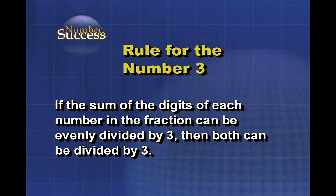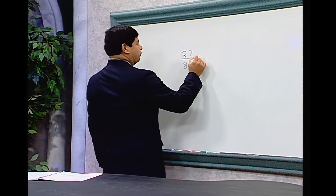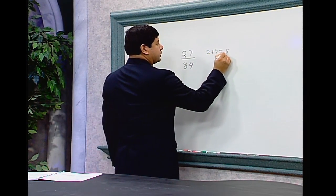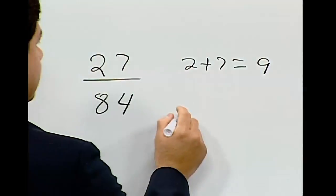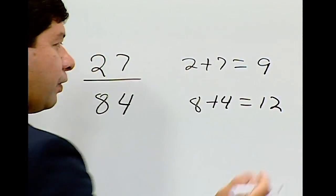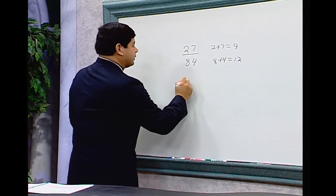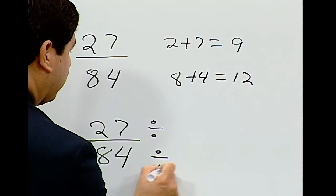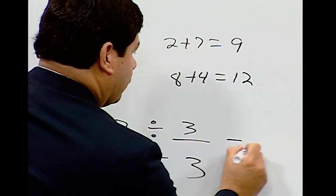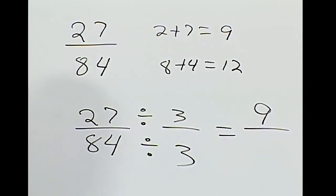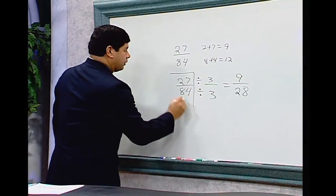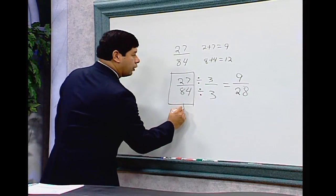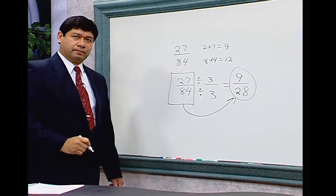Rule for the number 3: if the sum of the digits of each number in the fraction can be evenly divided by 3, then both can be divided by 3. Example: 27 over 84. 2 plus 7 equals 9, which is divisible by 3. 8 plus 4 equals 12, also divisible by 3. So dividing both by 3: 27 divided by 3 is 9, and 84 divided by 3 is 28. So 27 over 84 reduces to 9 over 28.